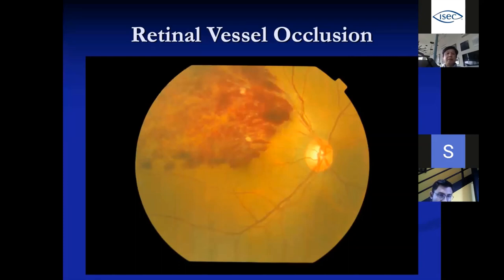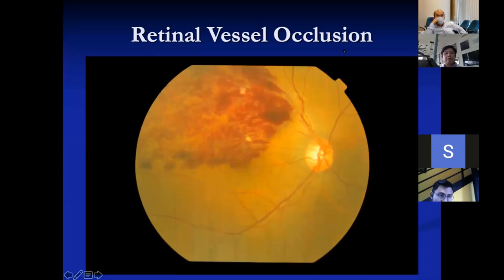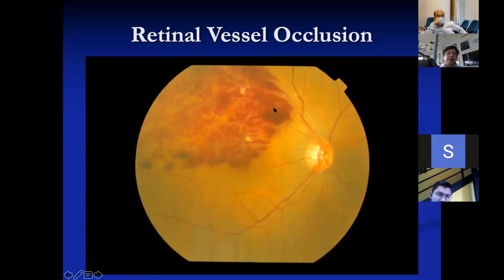The next topic is retinal vein occlusion. I'll concentrate on vein occlusion because arterial occlusion is usually not treatable. Vein occlusion is dramatic on examination — a lot of blood spills out from the drainage vein. All veins drain back to the optic nerve and have drainage sectors. When a sector vein is blocked — like a blocked drain — pressure builds up and blood spills out into that segment. This patient has macular involvement so reports vision problems.